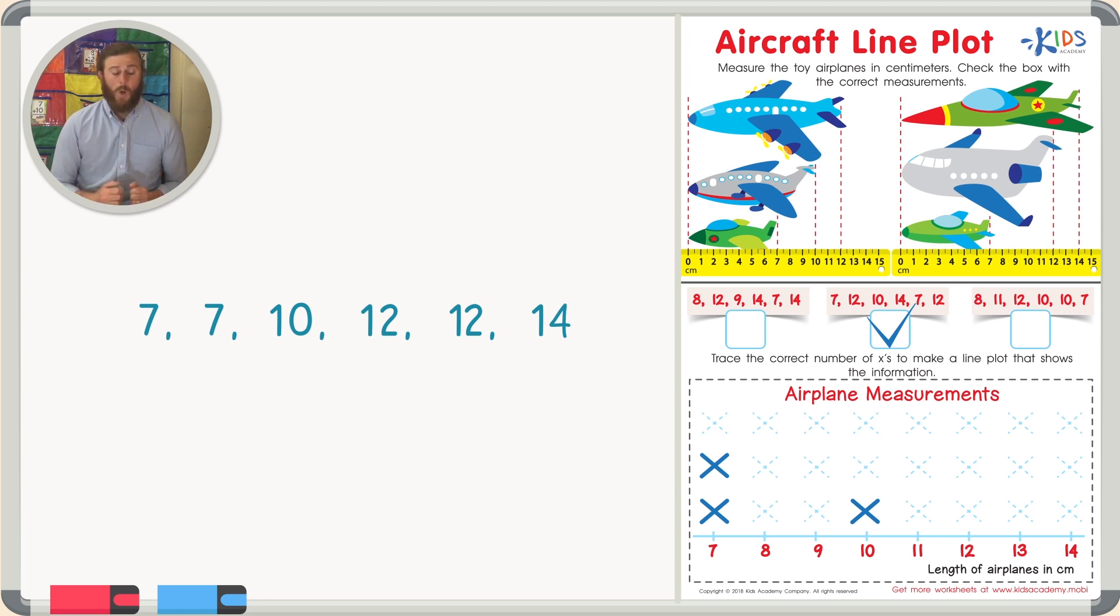What about 12? Well, for 12, there were two airplanes that were 12 centimeters long. So we're going to go ahead and trace two X's, one for each airplane. Were there any airplanes that were 13 centimeters long? I don't think so. So again, we'll leave this blank. And finally, there was one airplane that was 14 centimeters long. So we can go ahead and trace one X.